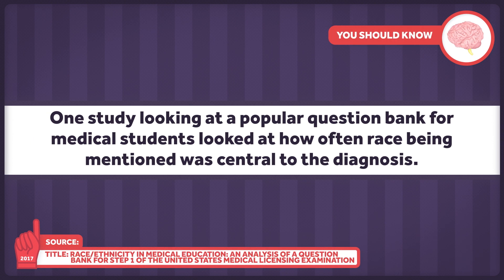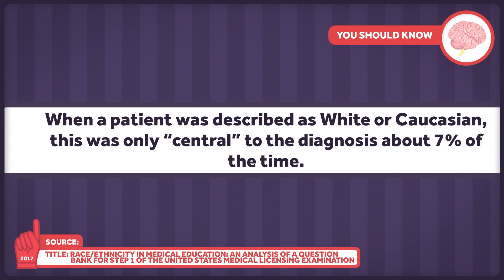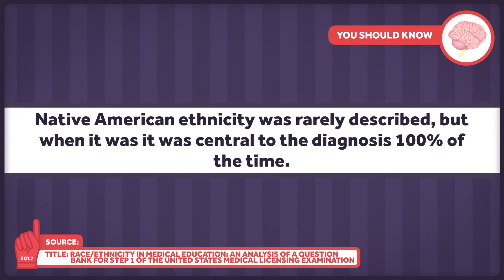One study looking at a popular question bank for medical students examined how often race being mentioned was central to the diagnosis. When a patient was described as white or Caucasian, this was only central to the diagnosis around seven percent of the time. When a patient was described as black or African-American or Hispanic, that number jumped up to 43 and 33 percent respectively. Native American ethnicity was rarely described, but when it was, it was central to the diagnosis 100 percent of the time.